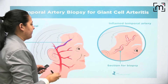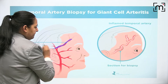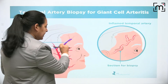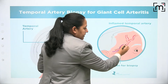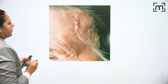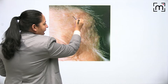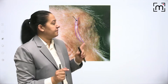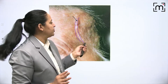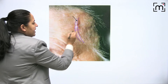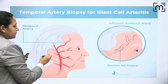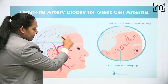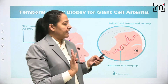Middle-aged females are predominantly involved and ESR will be raised. The patient has typical temporal headache and hardening of the temporal artery. You can appreciate the thick temporal artery in the live diagram of a patient. On biopsy, there is segmental involvement with skip areas - some areas are inflamed, then normal, then inflamed again.